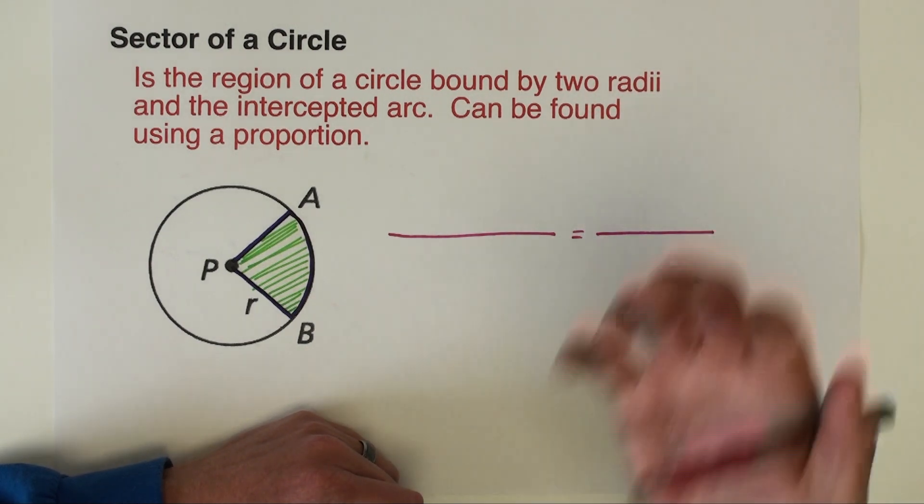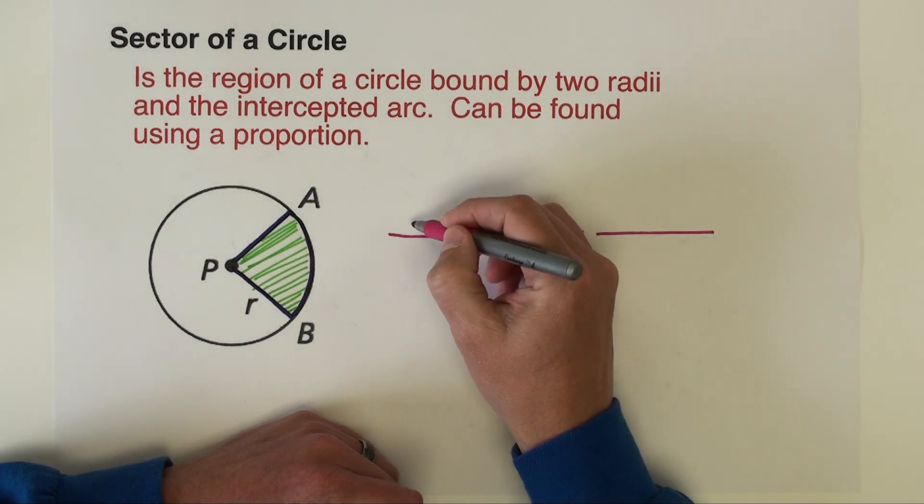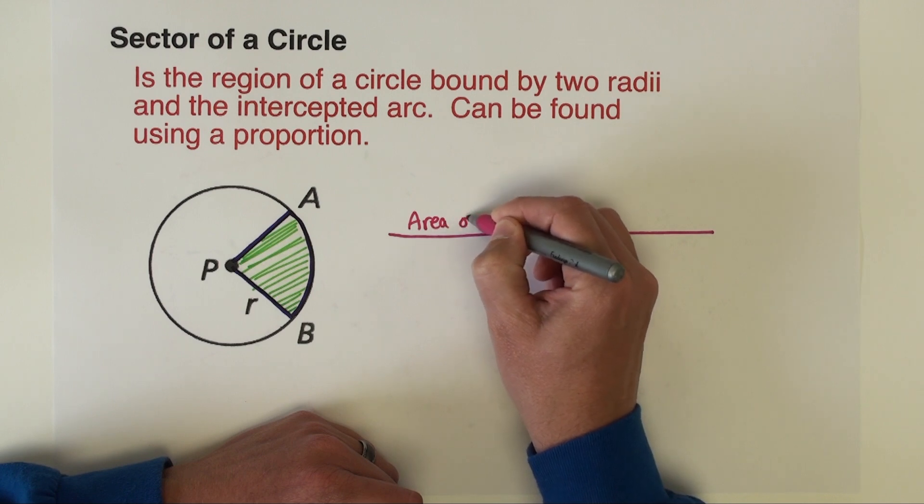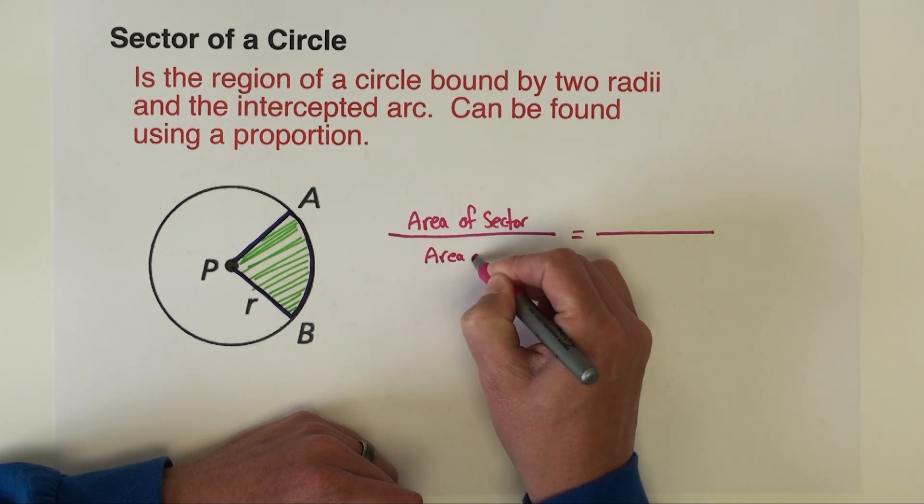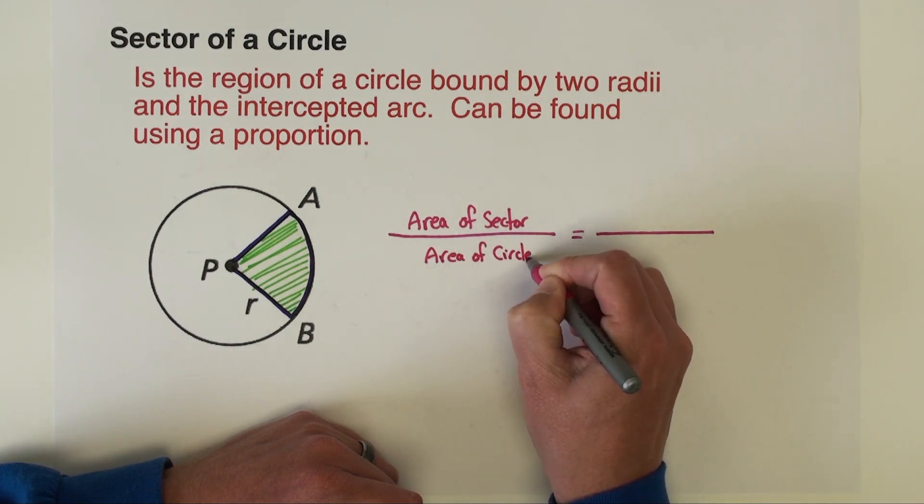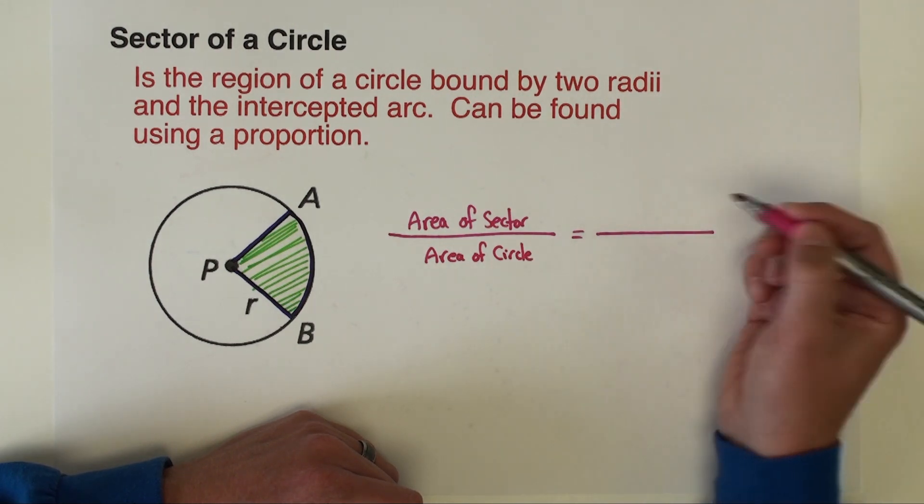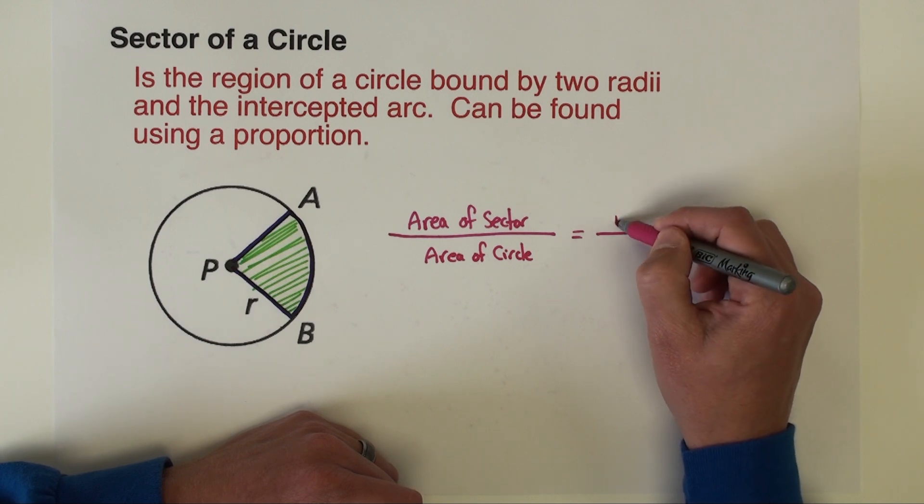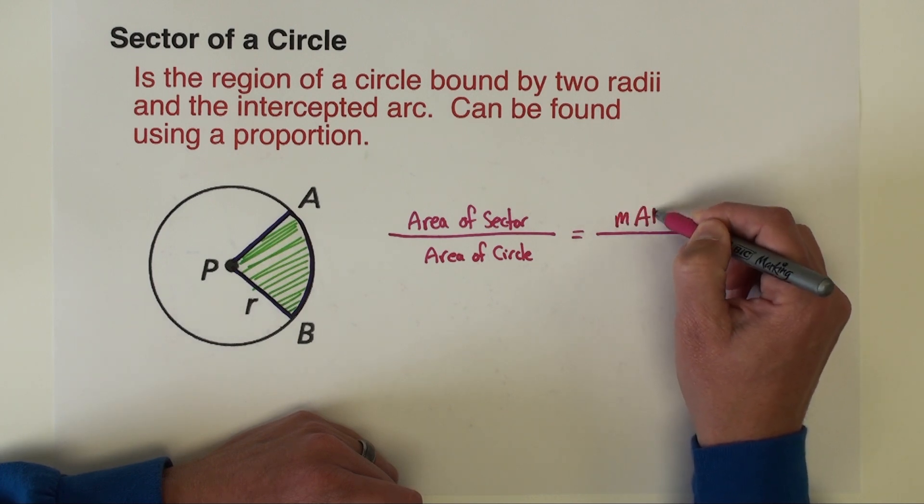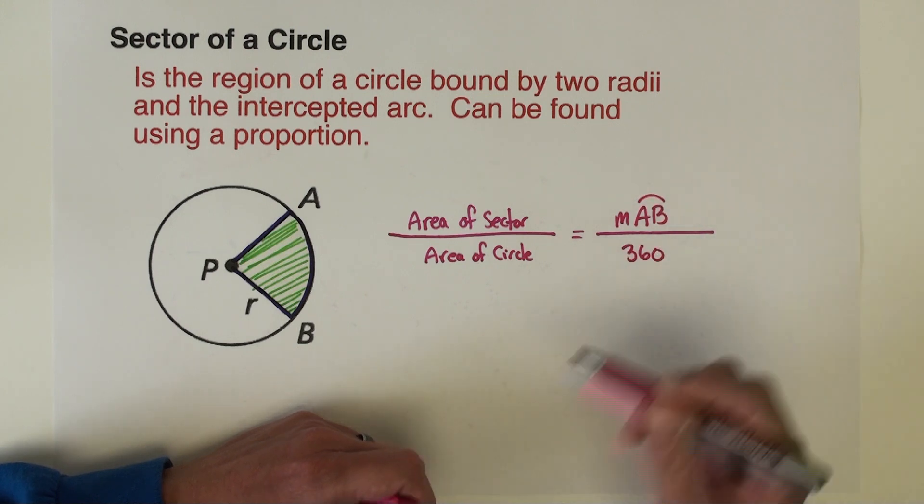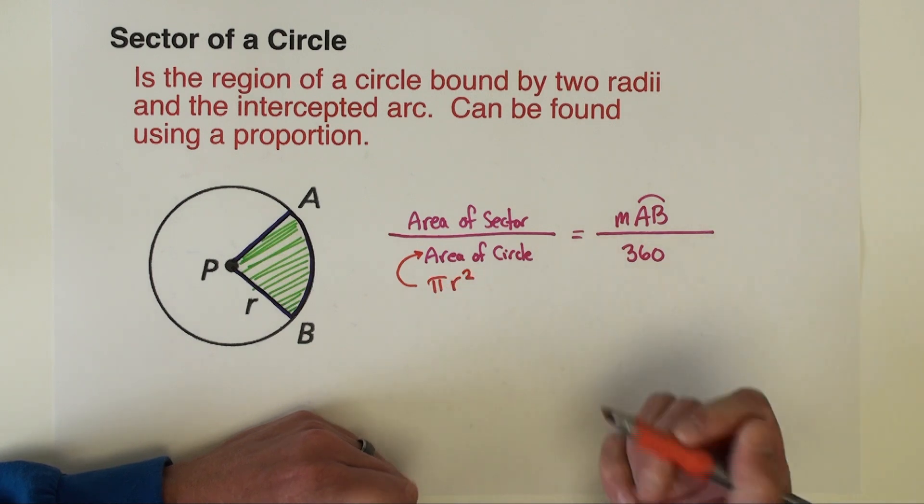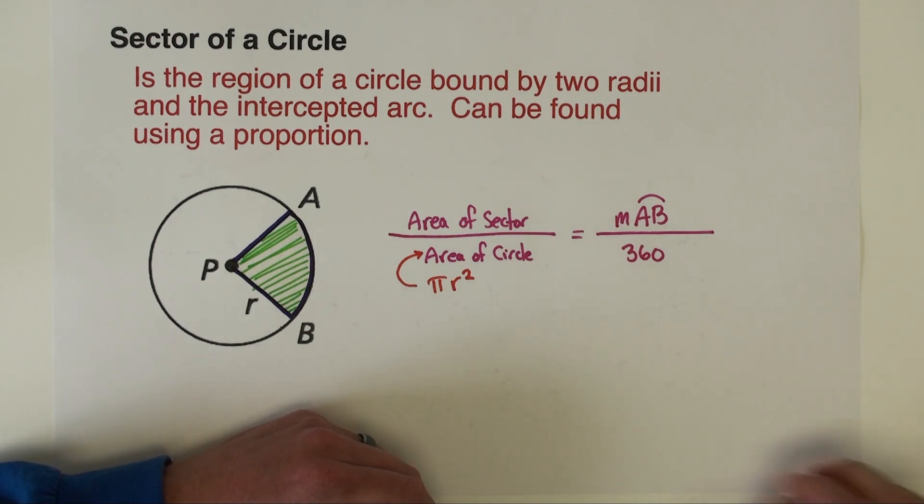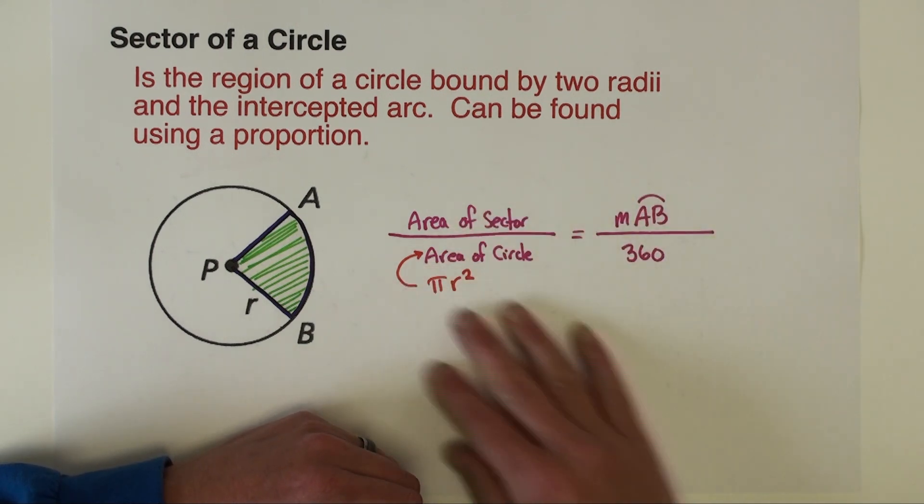And I like to do these where I put the part on top and I put the whole amount on bottom. So here's what it's going to look like. I'm going to do in the numerator of this first fraction, I'm going to do the area of the sector divided by the area of the circle, and I'm going to equal that to just like the last time when we were finding arc length, I'm going to do the measure of arc AB divided by 360. And if you want, you can certainly replace this with pi r squared since that's our formula for area of a circle. Okay, let's jump to a few example problems where we show you how to do this.